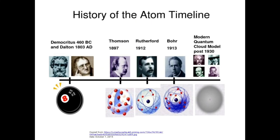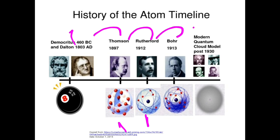The history of the atom is: first we had Democritus and Dalton, then the Thomson model known as the plum pudding model, then Rutherford's peach model, then the Bohr model, and after Bohr, the modern atomic model which says the atom is maximum empty space.